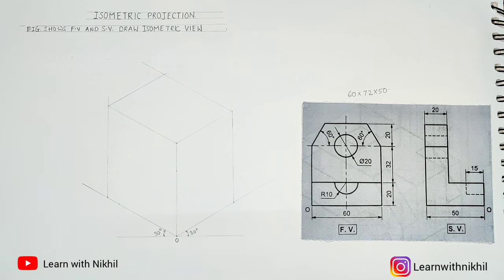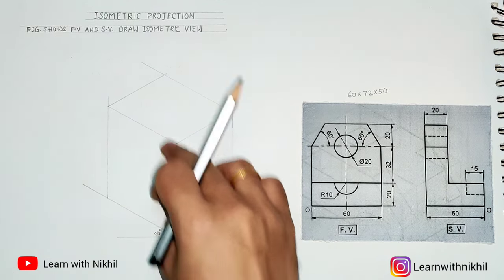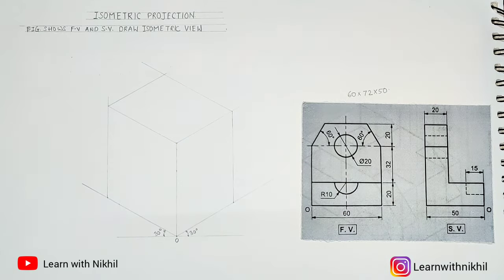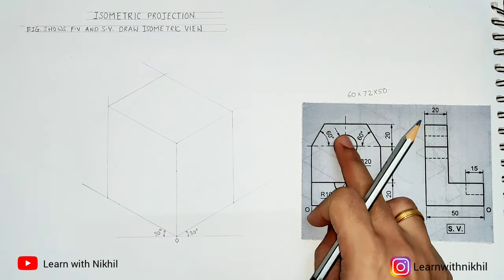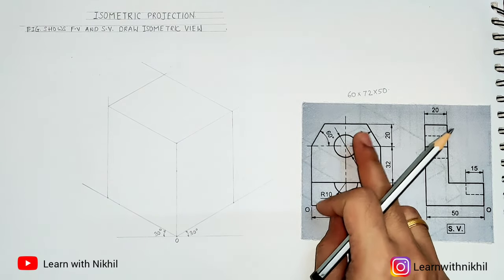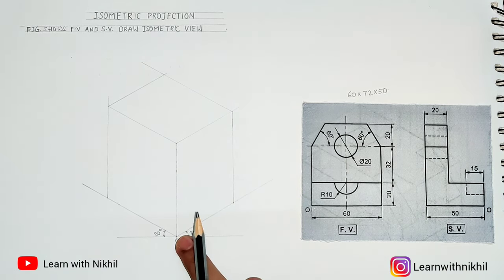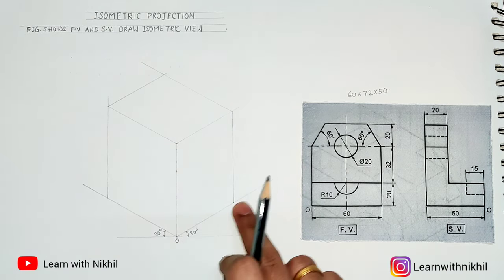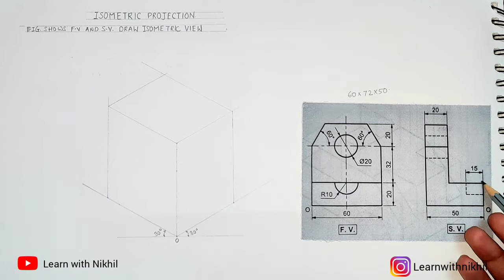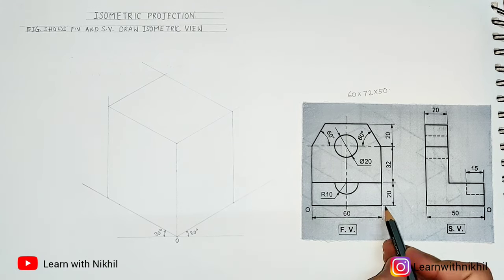After drawing the rectangular box, the next step is to draw the view. As I mentioned earlier, we have a circle and a semicircle in this sum. I explained how to draw a circle and a semicircle in my first lecture of isometric — you can refer to that also. Now drawing the view.